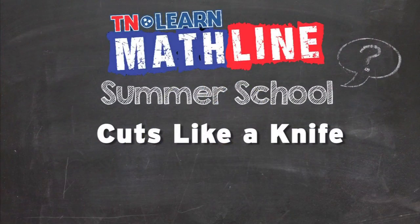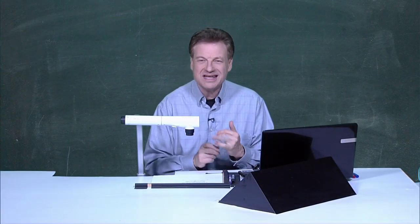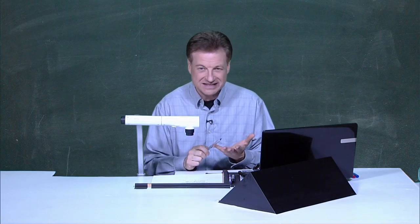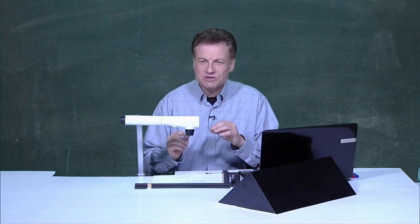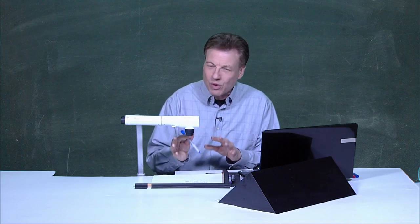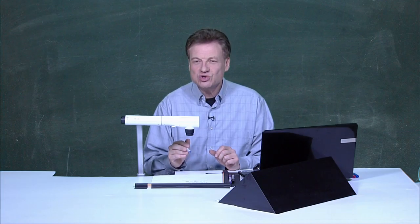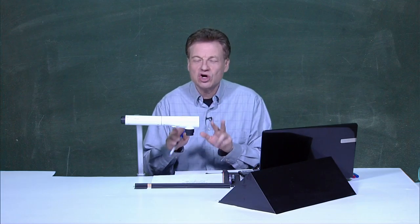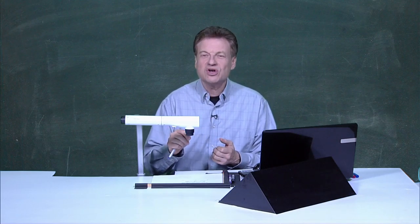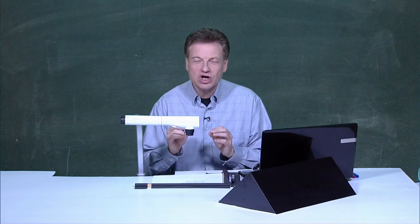Today's topic is called 'cuts like a knife.' In geometry, we ask: how do we cut line segments in half? How do we cut angles in half? We use the word bisect. We also use midpoints when it comes to line segments — a midpoint specifically divides a line segment into two congruent pieces. Same thing with a bisector of an angle: it's a ray that divides it into two congruent angles.